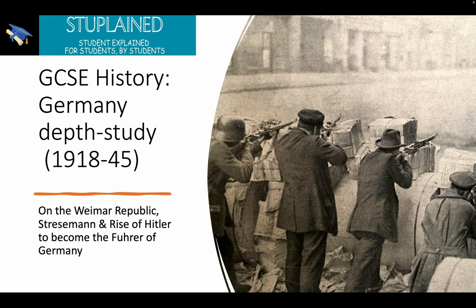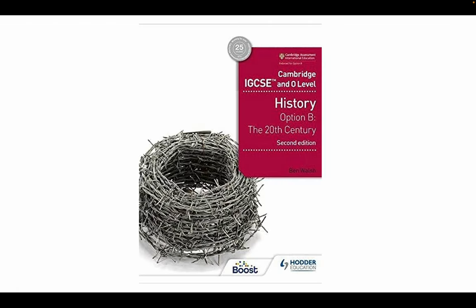This is GCSE History's depth study on Germany between 1918 and 1945. This video isn't going to cover what happens after Hitler becomes the Fuhrer — only up to that point, not the start of World War II. We'll cover the Weimar Republic under Stresemann and the rise of Hitler to become the Fuhrer of Germany. It's an all-inclusive long video covering everything you need to know. The information is from the Cambridge GCSE History textbook, but should be useful for different exam boards too.